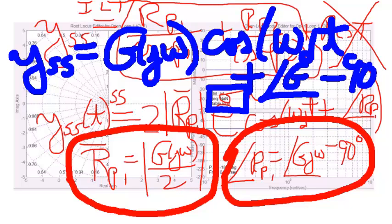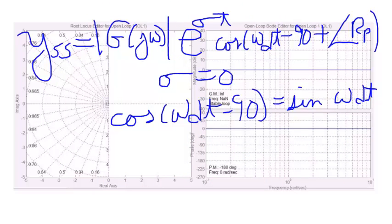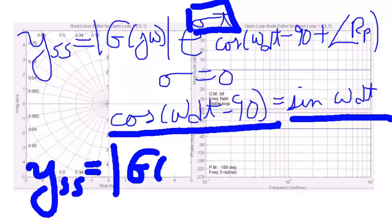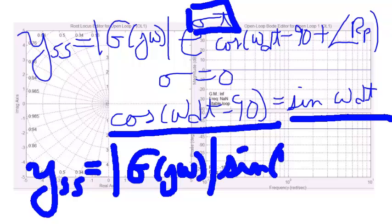Then, if I notice these two relationships here, we've already noticed that the sigma is equal to 0. I notice that the cosine of omega dT minus 90 is the sine. So I'll end up with my steady state value equal to the magnitude of g of j omega times the sine of omega dT plus the angle of g of j omega.